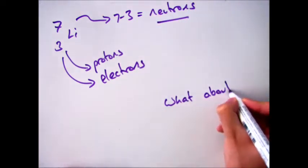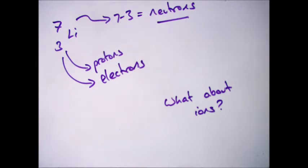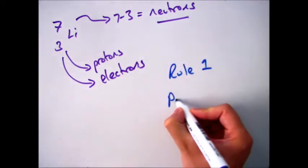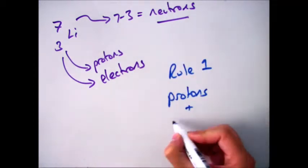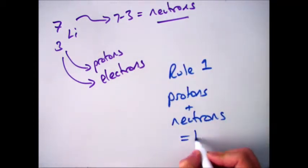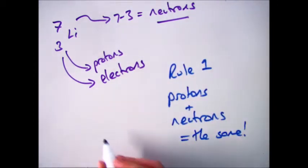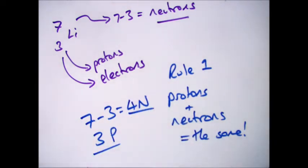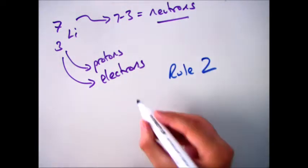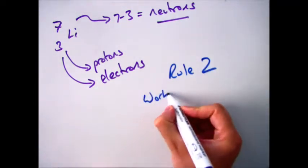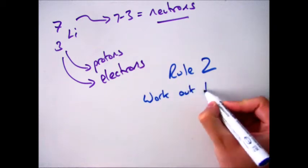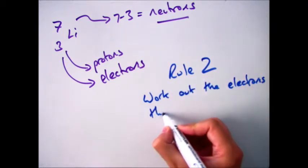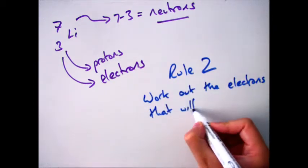But what happens when we get an ion, when it's gained or lost electrons? Well, first things first, the protons and neutrons — the way you calculate those does not change. You still have 4 neutrons and 3 protons. So your first step to work out the electrons of your ion is to work out the actual number of electrons that you're going to need to lose or gain.